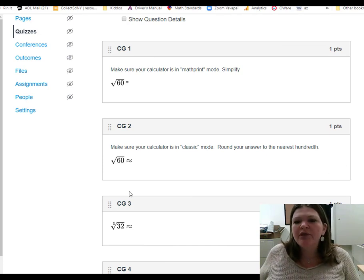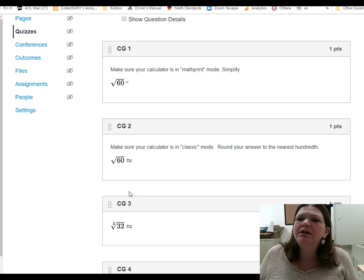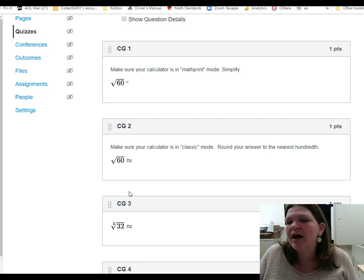Same thing with square roots. We can get two different possible answers. We can get a decimal approximation or we can get an exact answer, also known as a simplified radical.